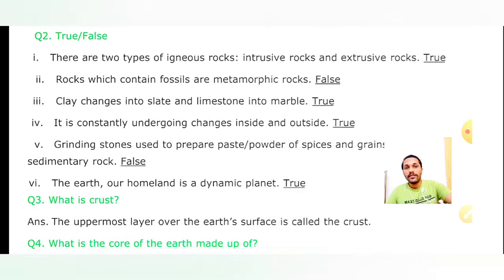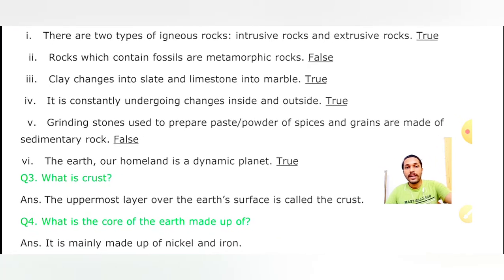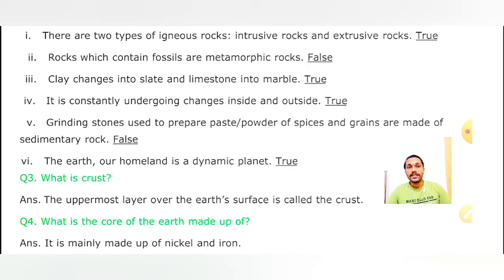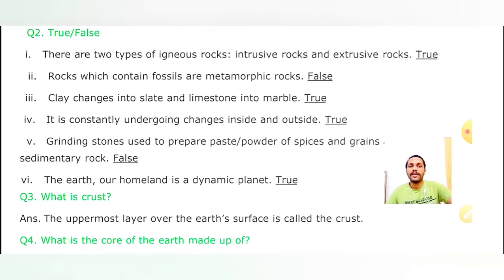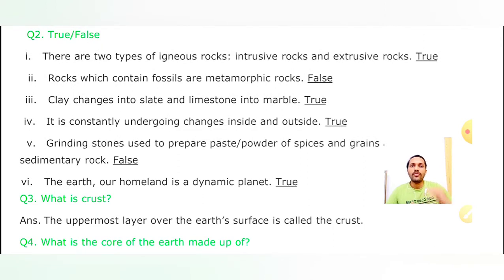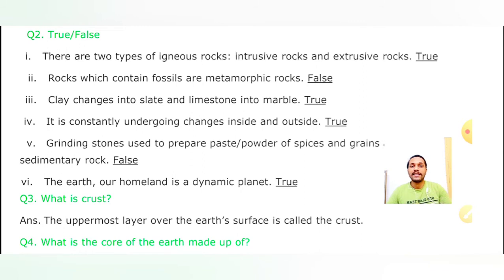Question 3: What is crust? Crust kya hota hai? Crust - mujhne bataya tha - jo upar ki layer hoti thi, Earth ke surface ki wajah se hamari crust kehlati thi. The outermost and thinnest layer of our Earth's surface is called the crust.